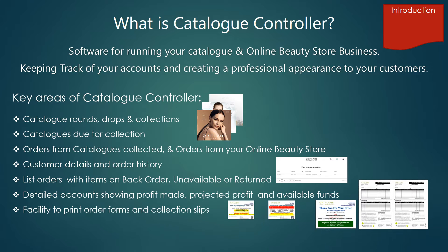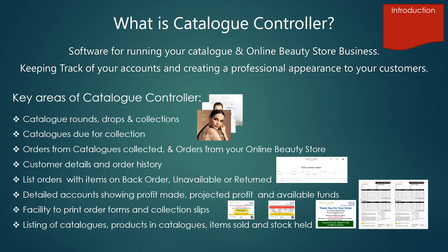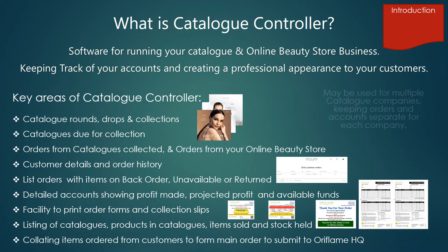Detailed accounts showing profit made and available funds. Facility to print order forms and collection slips. Listing of catalogues, products in catalogues, items sold and stock held. Collating items ordered from customers to form a main order to HQ. It may be used for one or more catalogue companies, keeping orders and accounts separate for each company.